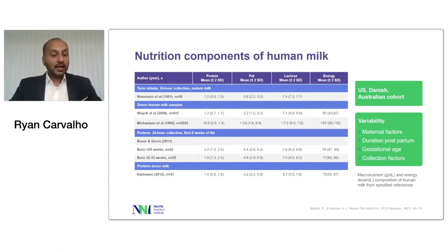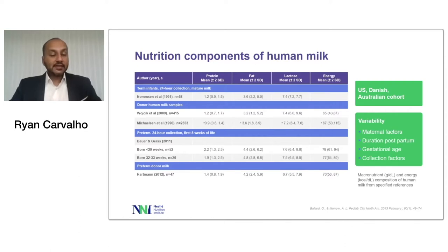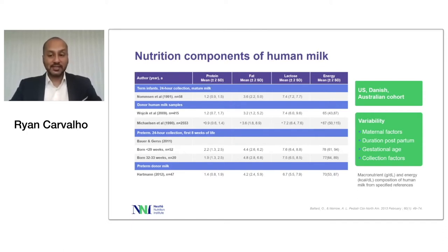Historically, data from the 1990s and early 2000s has really quantified the various macronutrient compositions of human milk. In this composition data from US, Danish, and Australian cohorts, we see variability in the human milk macronutrient profile across different countries. However, when you look at these studies in greater detail, you realize that the way human milk is collected, stored, and analyzed is also a significant contributing factor to some of the levels we see. A lot of this variability is clearly explained by maternal factors, the time when you collect human milk after delivery, the gestational age, and the collection factors.